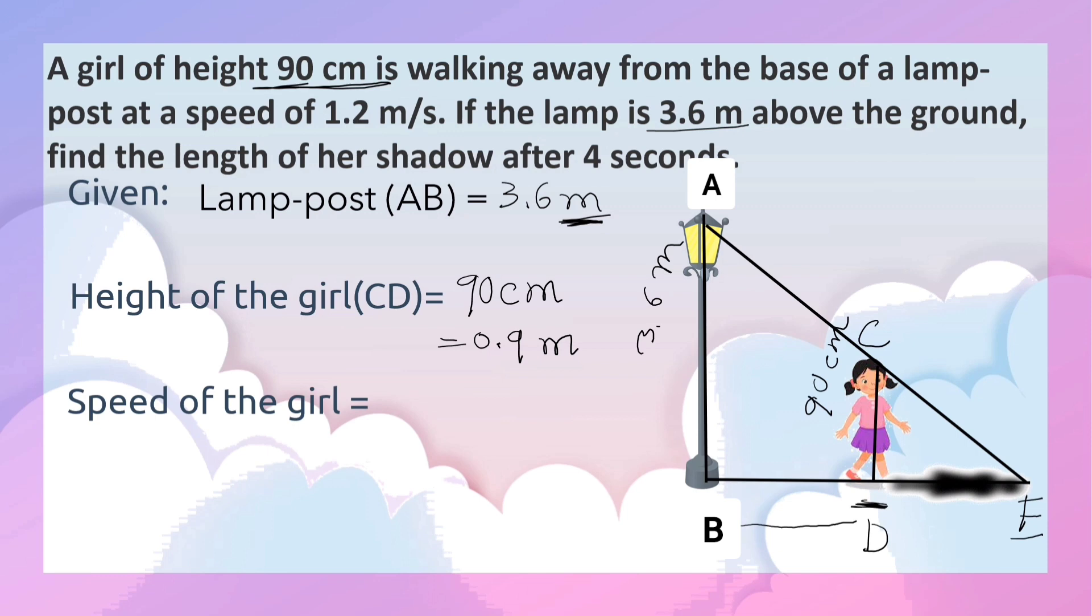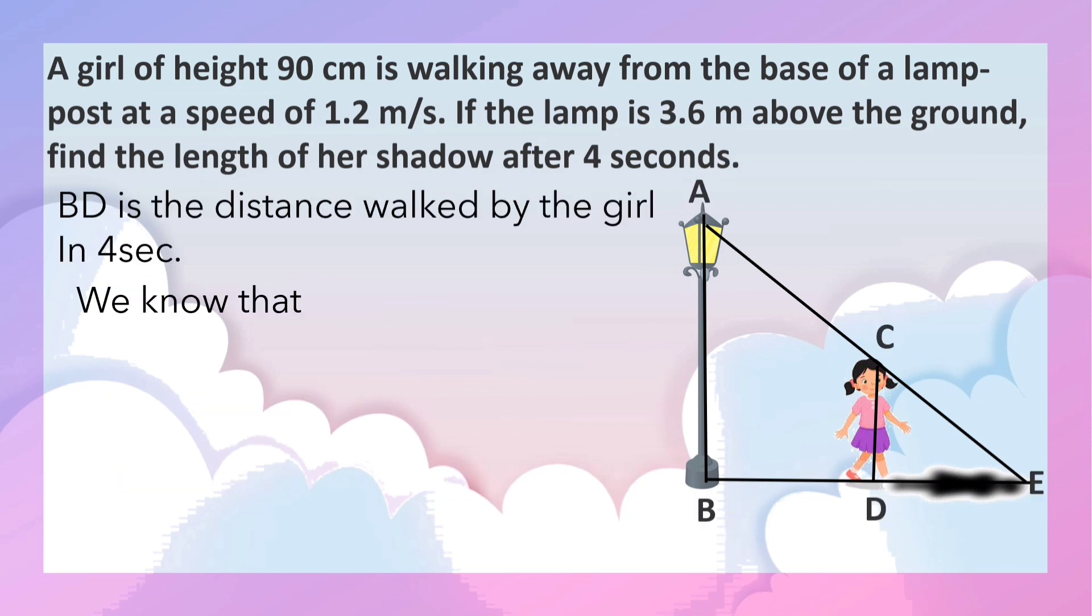Speed of the girl is 1.2 meters per second. We have to find the length of the shadow. Length of the shadow is represented by DE. Let it be X. BD is the distance walked by the girl in 4 seconds.